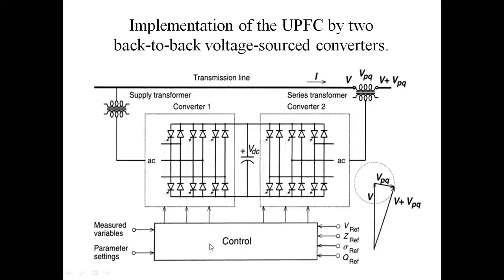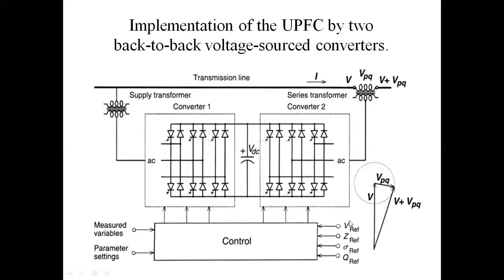This is the control diagram — the Control Scheme. Here are the Measured Variables. Next are the Parameter Settings. Here, V Reference and Z Reference: V Reference is the Voltage Reference Value, and Z Reference is the Impedance Reference. Here, we are connecting switches — we can disconnect the Series Compensator and Shunt Compensator.